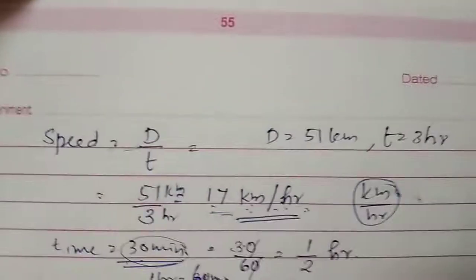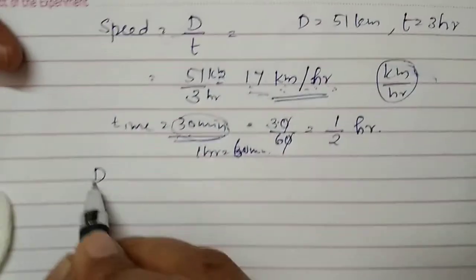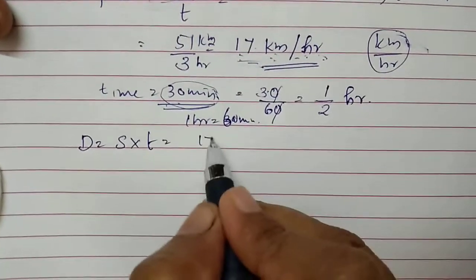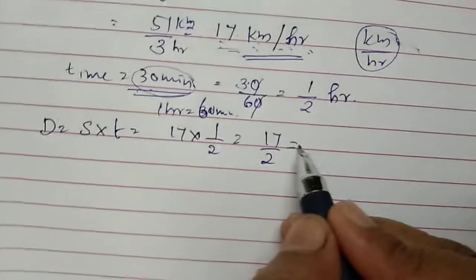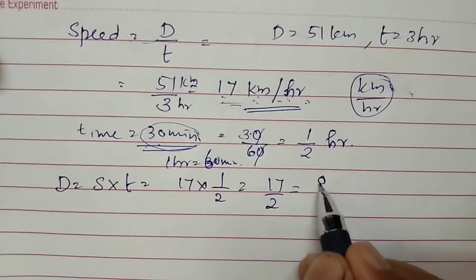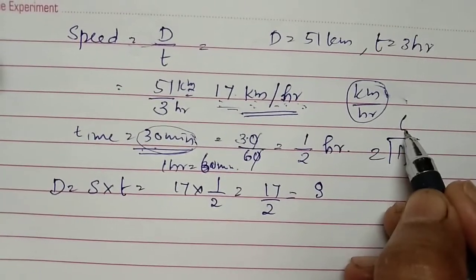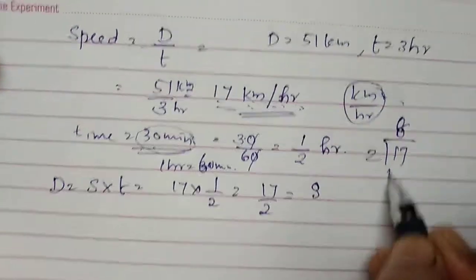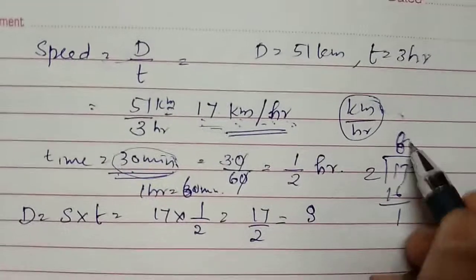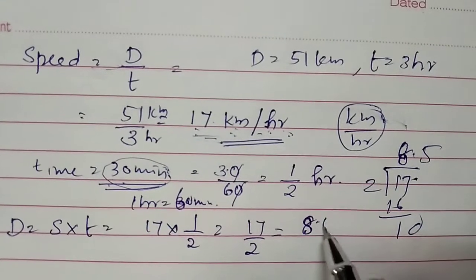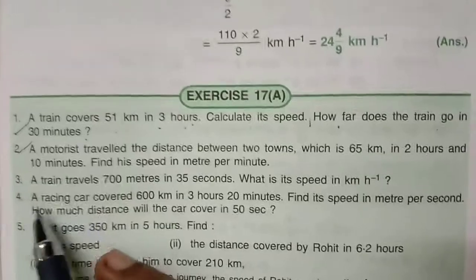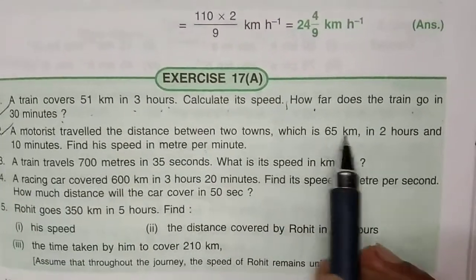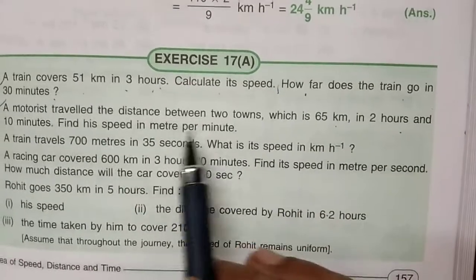Now you can calculate how far: distance equals speed multiplied by time — that is 17 multiplied by 1/2, which is 17/2. Dividing 17 by 2 gives 8 remainder 1, so in decimal it is 8.5 kilometers. Give more importance to what units are given for time and distance — otherwise you will make a mistake when calculating speed.